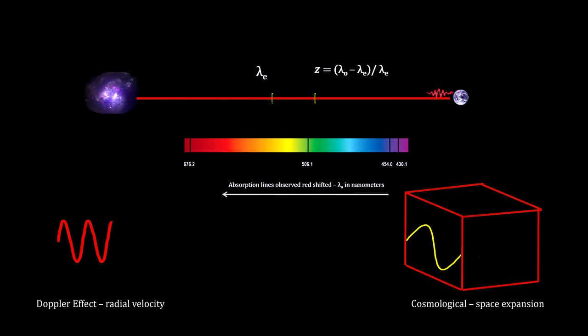In either case, we continue to measure redshift, Z, as the difference between the wavelength emitted and the wavelength observed, divided by the wavelength emitted.